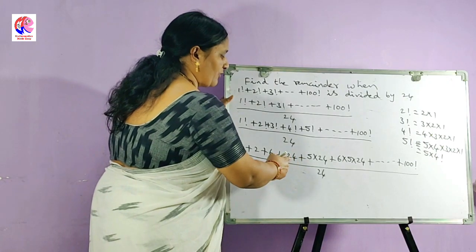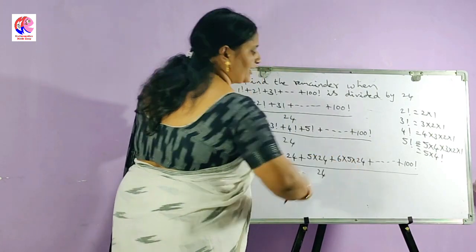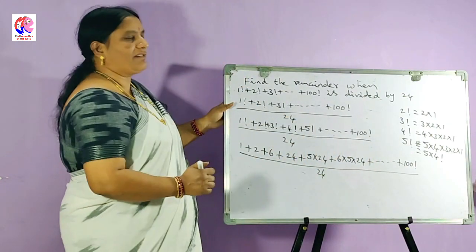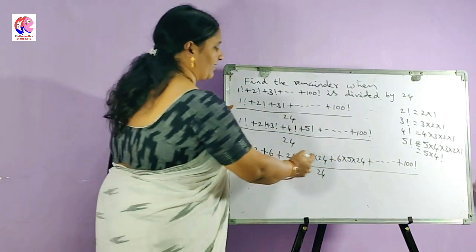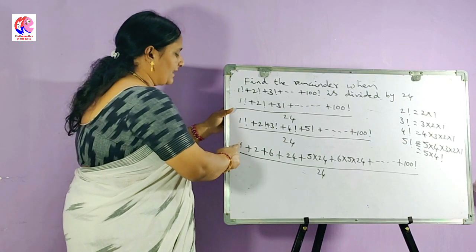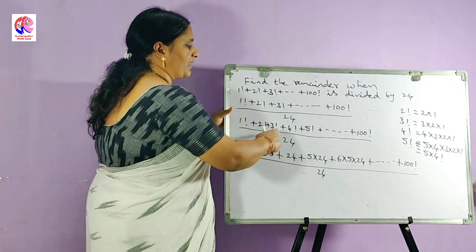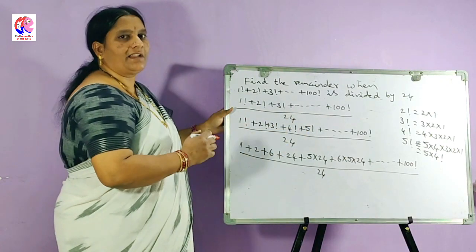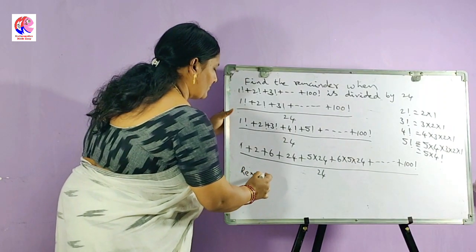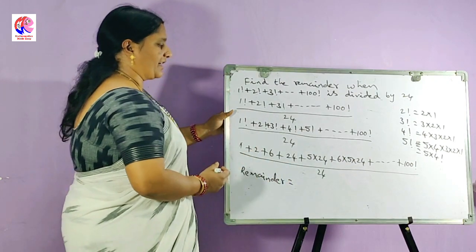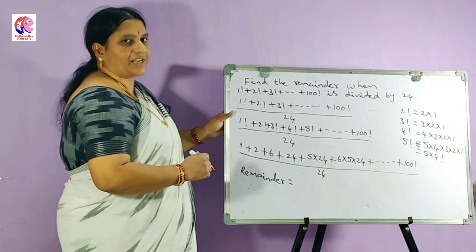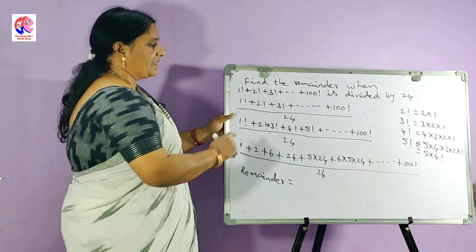From the 4th term: 24 plus 5 into 24 plus 6 into 5 into 24 plus so on plus 100 factorial. If we observe from the 4th term, 24 is the factor of all these terms. So 24 is the factor of all the terms except the first 3 terms. In all these terms from the 4th onward, 24 is the factor.